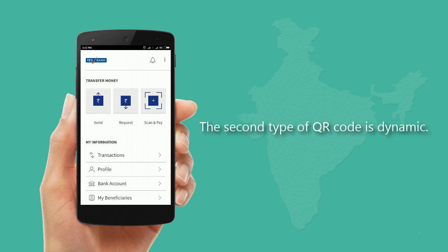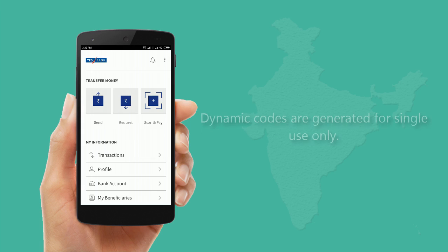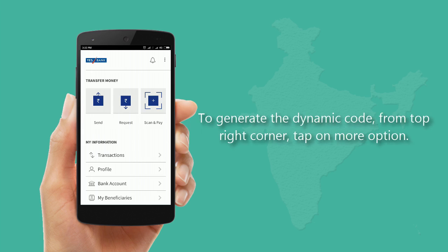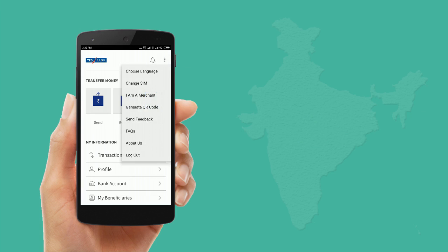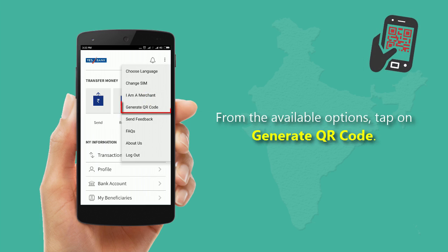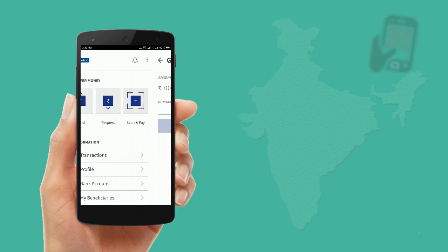The second type is a dynamic QR code. Dynamic codes are generated for single use only. To generate a dynamic code, tap on the more options icon from the top right corner, then from the available options tap on Generate QR Code.